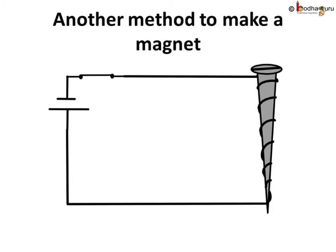If we coil an insulated copper wire around an iron nail and connect the free ends of the wire to the terminals of a cell through a switch and flow the current through that wire, it behaves like a magnet.